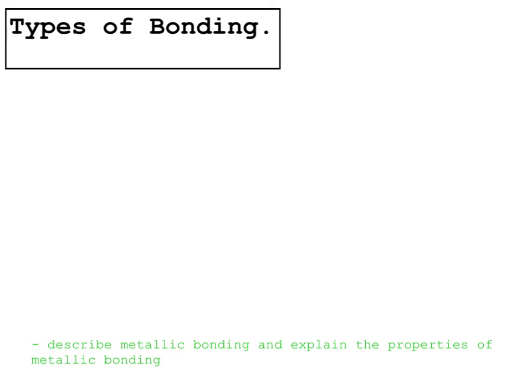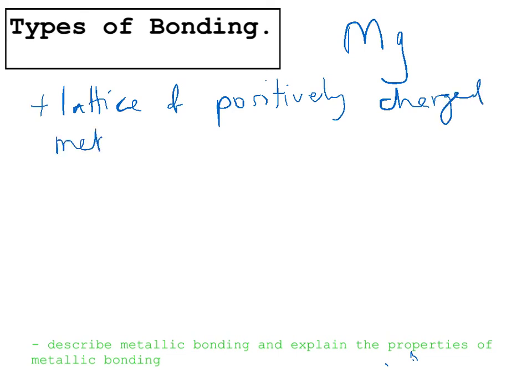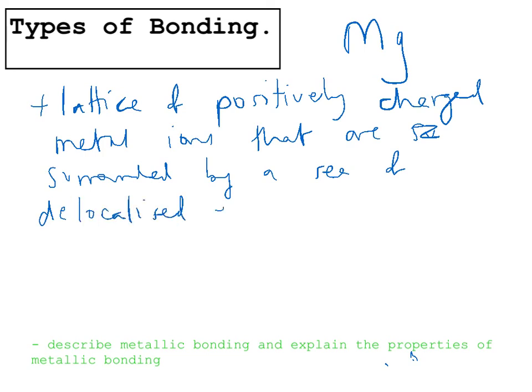Metallic bonding is the last type of bonding that you learn about in this topic. An example of something with metallic bonds would be magnesium. Metallic bonding is where you have a lattice of positively charged metal ions that are surrounded by a sea of delocalised electrons. Basically delocalised means that the electrons are free to move wherever they like in the structure.